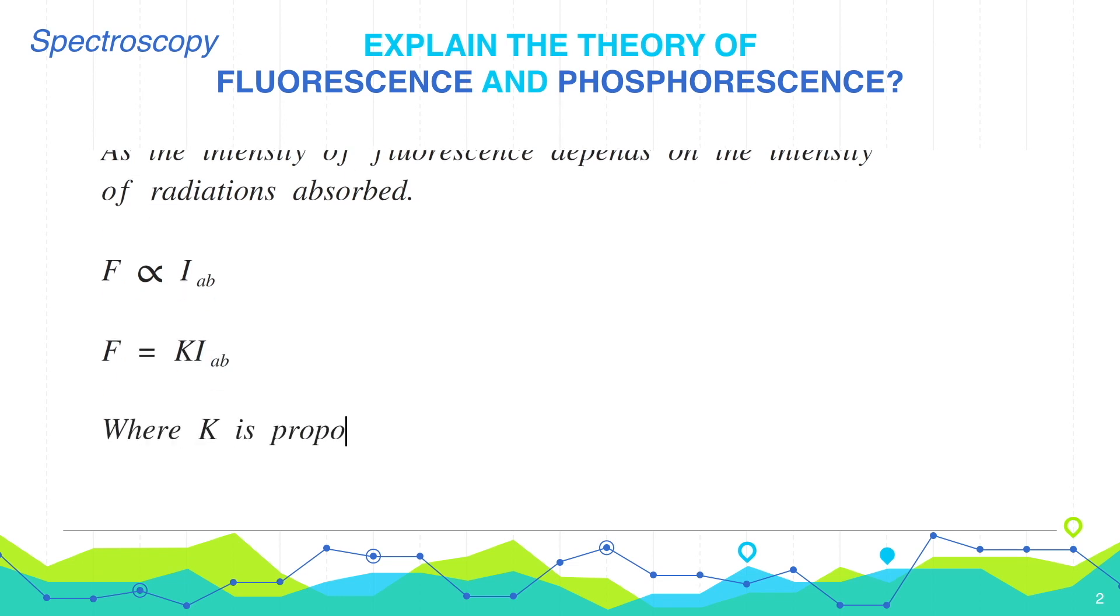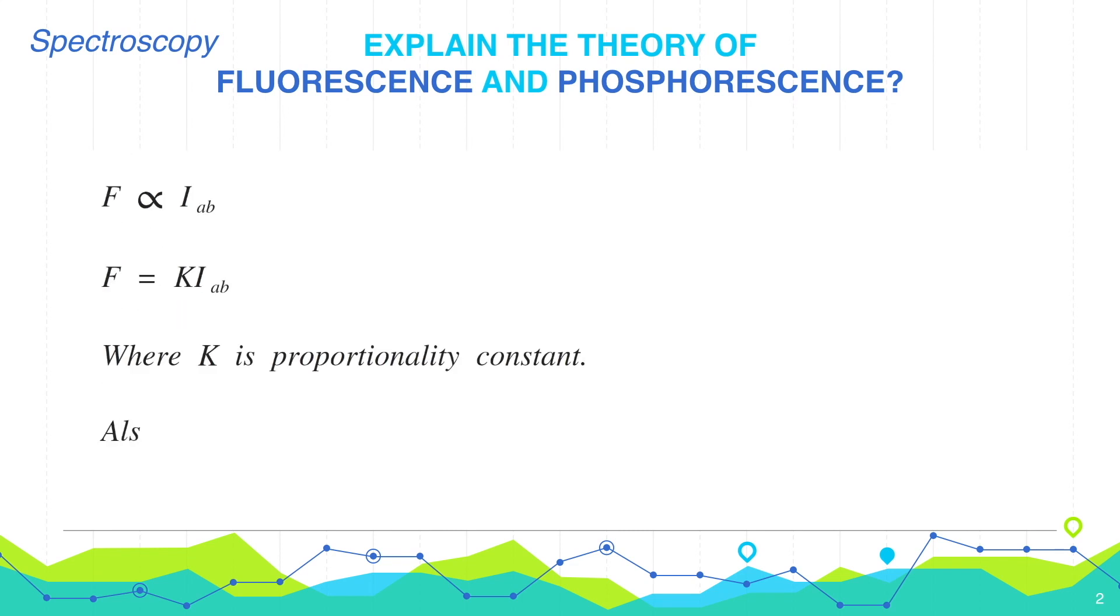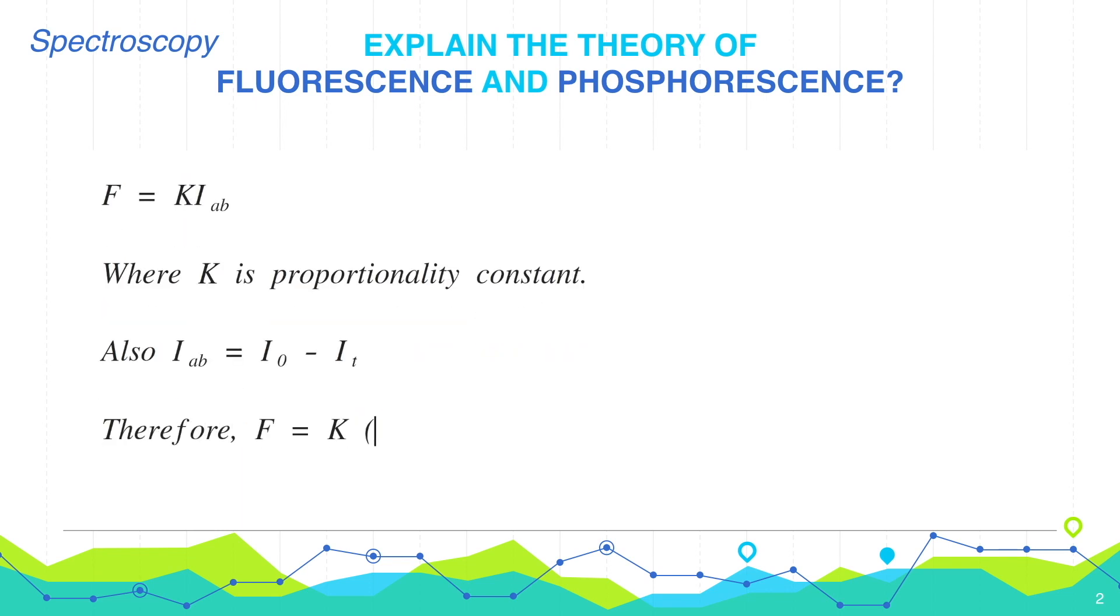Therefore, F equals K times I absorbed, where K is the proportionality constant. This is equation number 1.